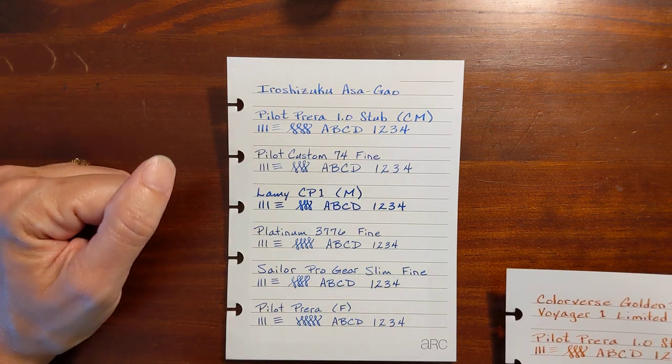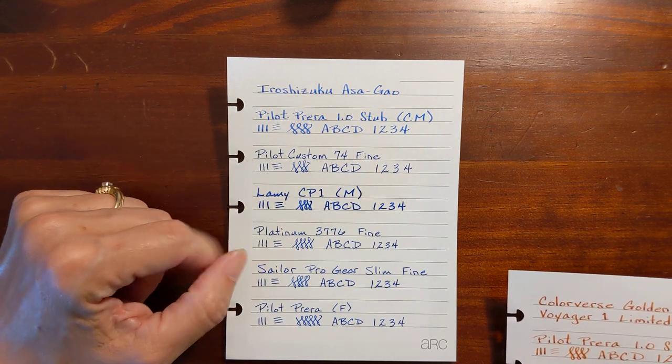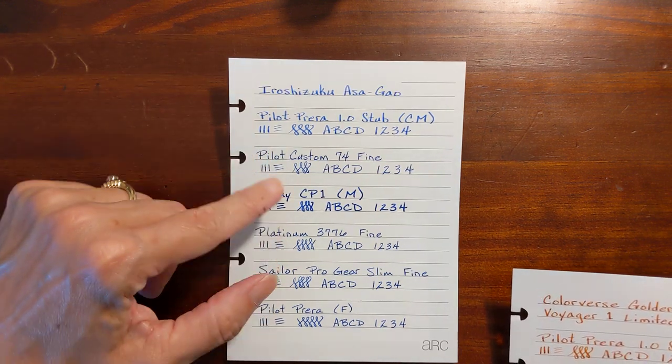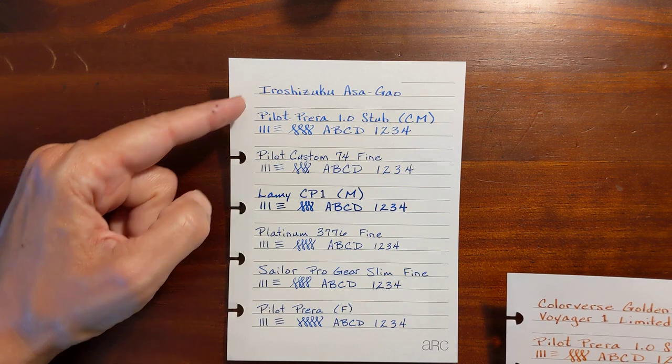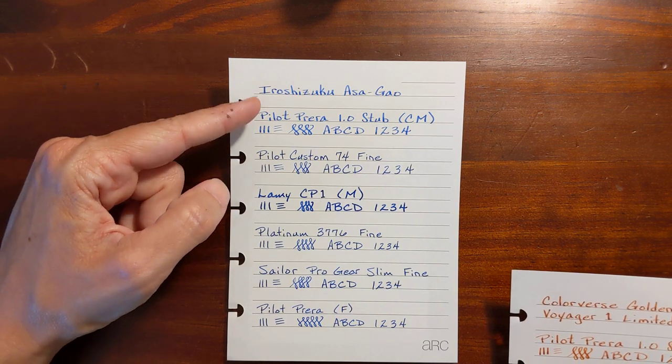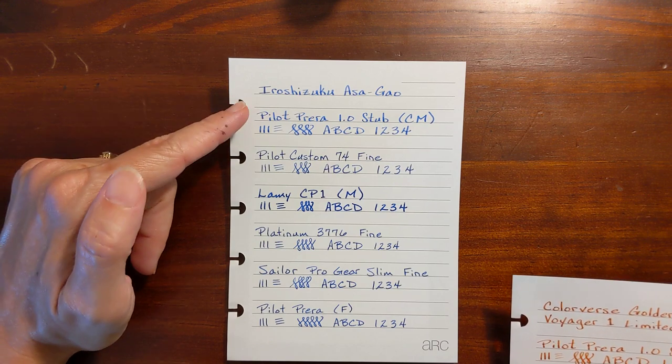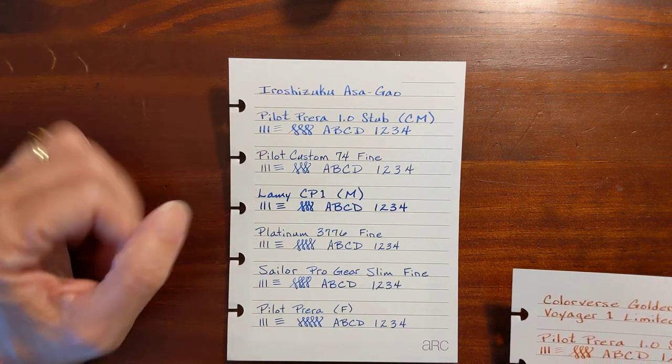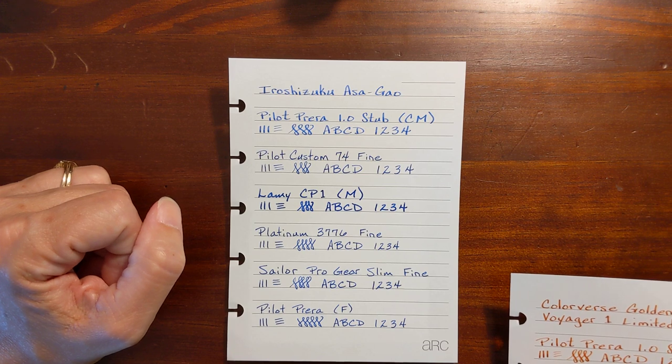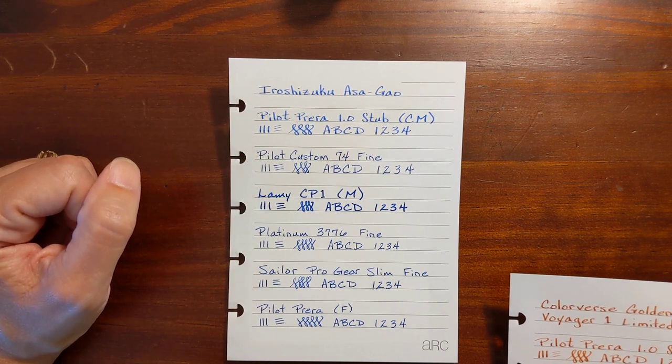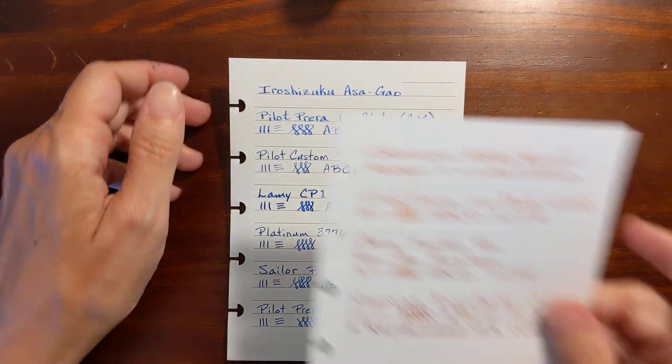It doesn't the color doesn't really change. This is a pretty saturated ink. When I use it in my fine nibs there's no shading, even in the stub nib there was hardly no shading detectable. Asa-gao is one of those saturated blue inks that looks the same pretty much regardless of which nib you put it in.